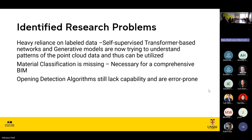The identified research problems include: first, heavy reliance on labeled data — without labeled data we cannot train a deep learning model. New models like self-supervised, transformer-based networks, and generative models are trying to identify patterns in point cloud data, similar to positional encoding in LLMs. Another gap is that material classification is missing in research, which is necessary for a comprehensive BIM. Additionally, opening detection algorithms for doors and windows still lack capability and are error-prone — there is still confusion identifying these elements and we need more robust algorithms.